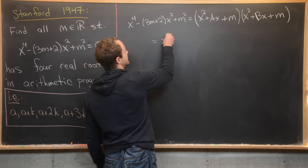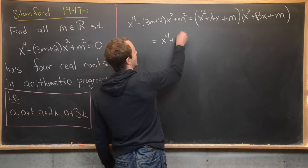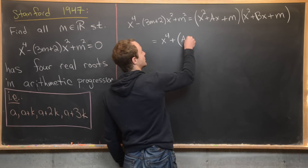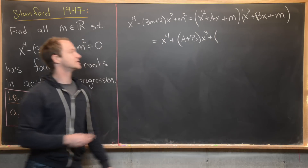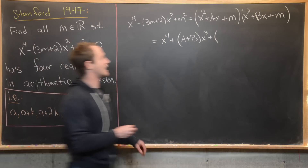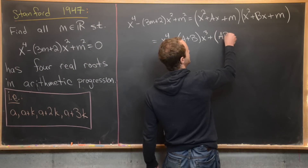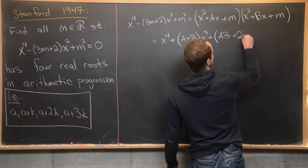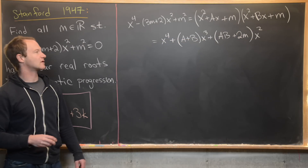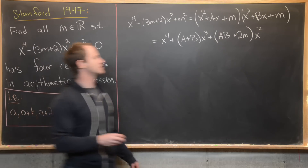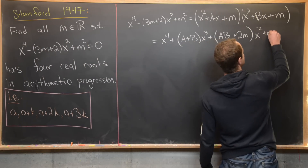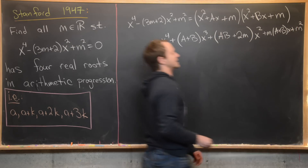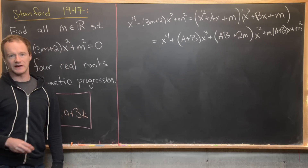Expanding the product gives x⁴, then the x³ coefficient is a + b, the x² coefficient is ab + 2m, the linear coefficient is m(a + b), and the constant term is m², exactly as needed.